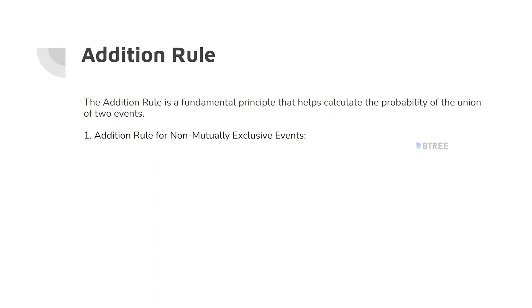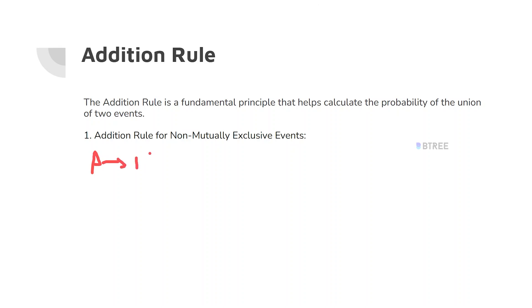The Addition Rule is the fundamental principle that helps calculate the probability of the union of two events. For a non-mutually exclusive event, we need to calculate the intersection path, because the intersection values matter.